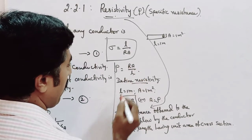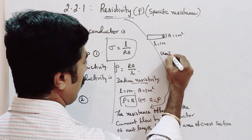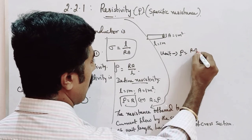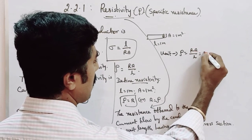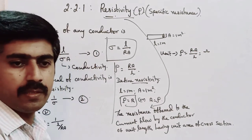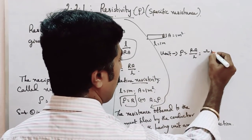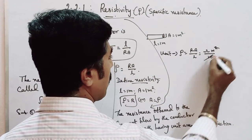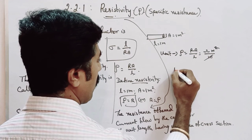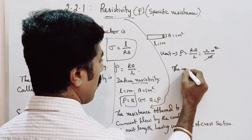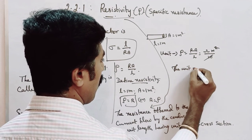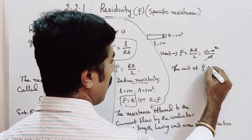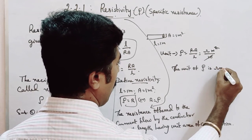Now let us find the unit of resistivity. From the formula rho equals RA over L: resistance has unit ohm, area has unit meter squared, and length has unit meter. One meter in the numerator and one meter in the denominator cancel, so the unit of resistivity or specific resistance is ohm meter.